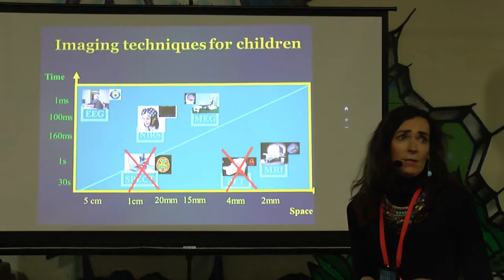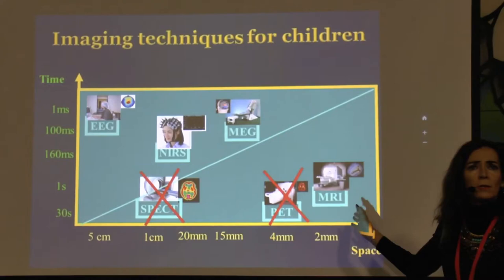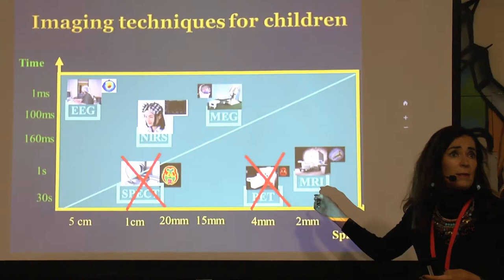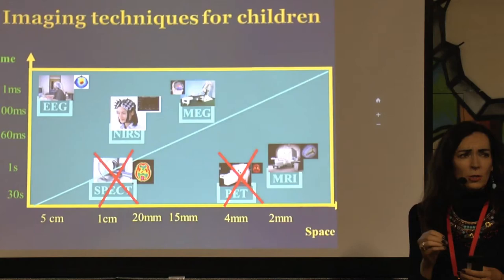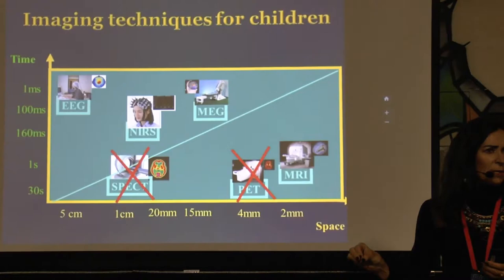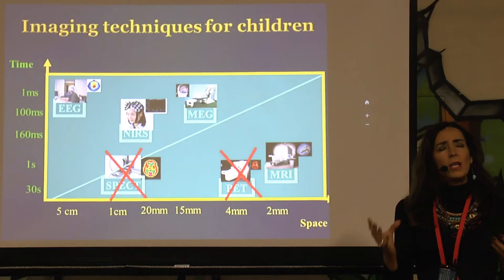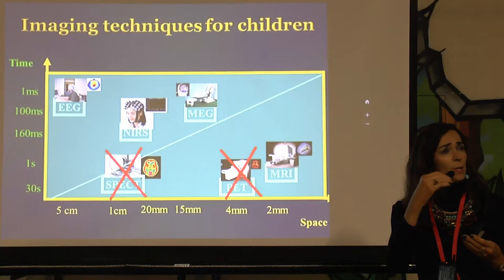MRI is the imaging technique with the best spatial resolution, so if you want to know where in the brain the deficits are, this is the best technique. There are other imaging techniques like EEG — electroencephalography — which has very good temporal resolution, so you can know in milliseconds when something happens in the brain. But EEG's spatial resolution is very bad, and you cannot look at areas below the cortex.